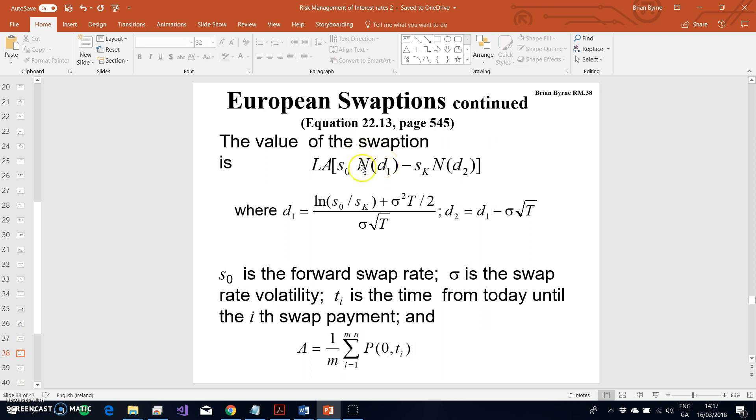We have the standard variable d1 and d2. d1 and d2 are estimated in the usual way using the Black model. We take the forward rate, the exercise rate, volatility squared multiplied by the maturity of the option divided by 2, over the volatility of the option multiplied by the square root of the maturity.